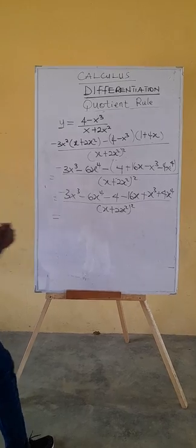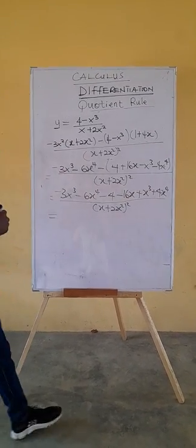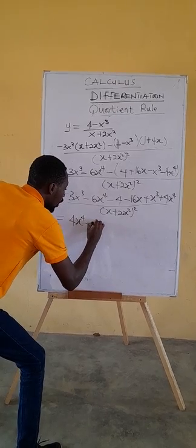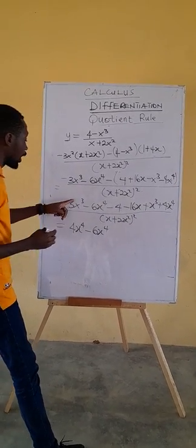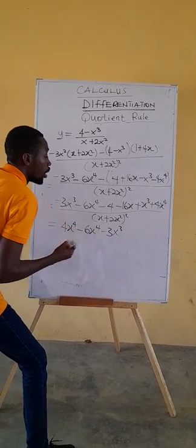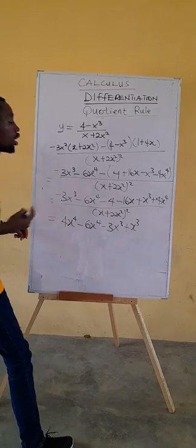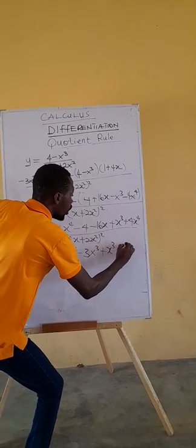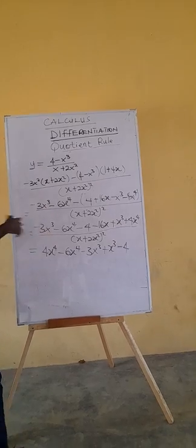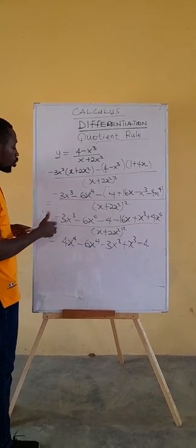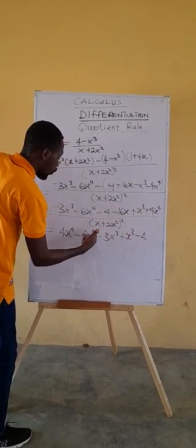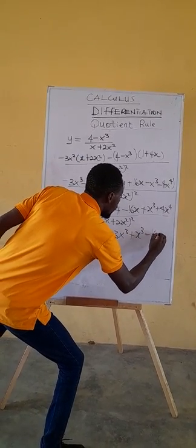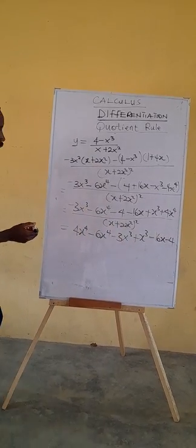Now we collect like terms by highest power. For x to the fourth: 4x⁴ minus 6x⁴ gives minus 2x⁴. For x cubed: minus 3x³ plus x³ gives minus 2x³. We have no x squared term. For the linear term: minus 16x. And the constant: minus 4. All over (x plus 2x squared) squared.